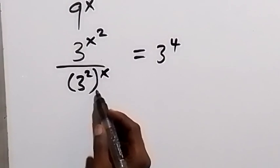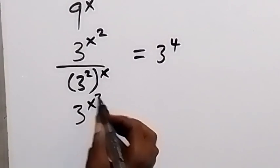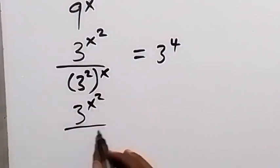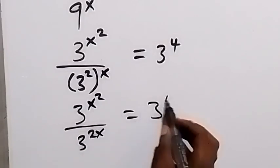And in the next step, we can also write this as 3 raised to power x squared, divided by, this power multiplies, and we have 3 raised to power 2x, equals to 3 raised to power 4.